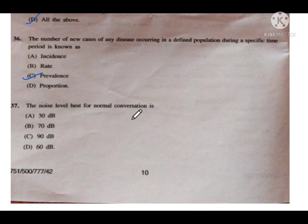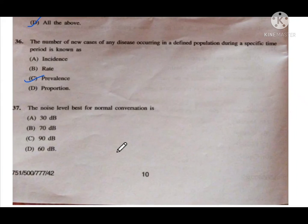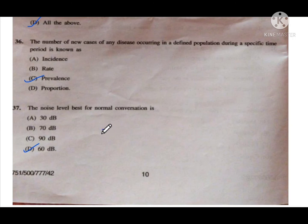Question number 37: Noise level best for normal conversation — option A is 30 decibels, B is 70 decibels, C is 90 decibels, and D is 60 decibels. Option D — 60 decibels — is the correct answer for normal conversation. Above 85 decibels is considered a harmful noise level. Prolonged exposure to 70 decibels can cause ear damage, and above 120 decibels also risks ear damage.